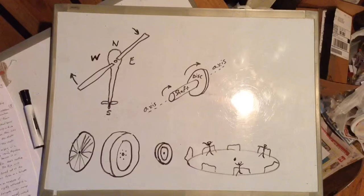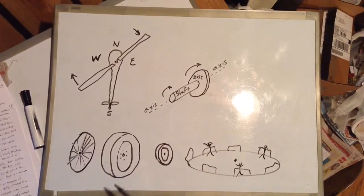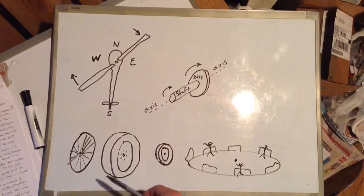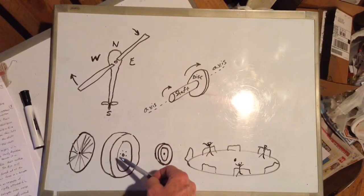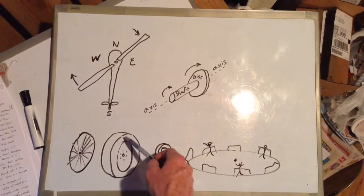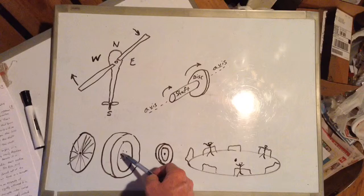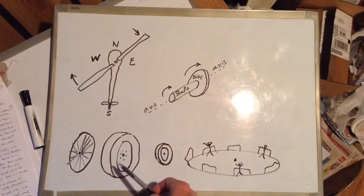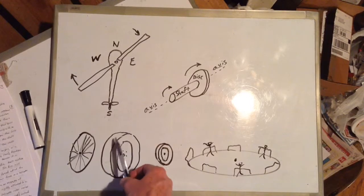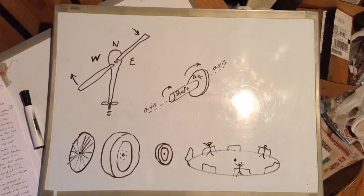In summary, the angular momentum of a rotating body is determined by three different things. One is the amount of mass of the rotating body. Two is the distance of that mass from the axis that the rotating body is rotating around. And the third factor is the speed at which that mass is going round and round. Those three factors determine your angular momentum.